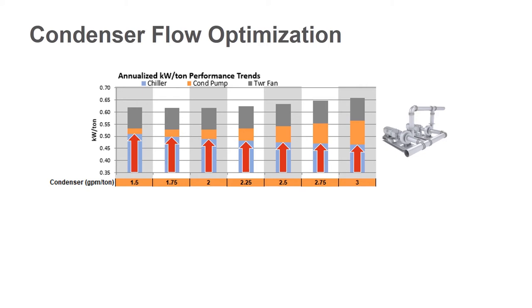The first one is the condenser pumps. As we showed you before, as we go to lower flow, we're going to decrease the power consumption. So on an annualized result, you can see it here. From 3 down to 1.5, the pumps are going to consume a lot less energy.